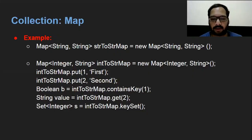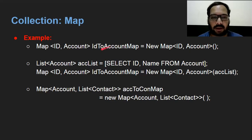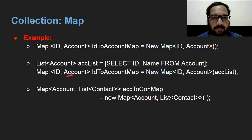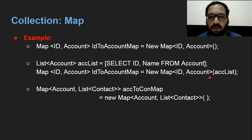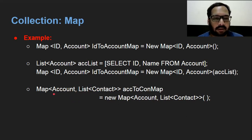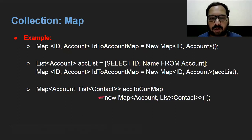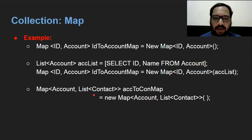You can also use Map with SObjects. If you want to store ID and Account records together, you can create a Map of ID comma Account. I first created a List of Account then converted it into a Map — if you pass a list as an argument into Map, it will be converted into a map. In another example I am using Map of Account comma List of Contact, where Account will be the key and a list of Contact will be the values. Inside a Map you can use a List as values as well.